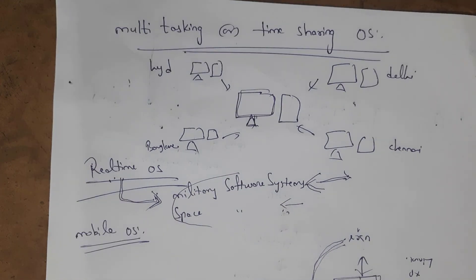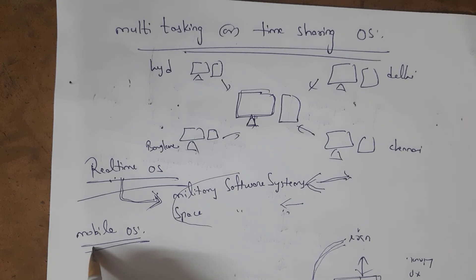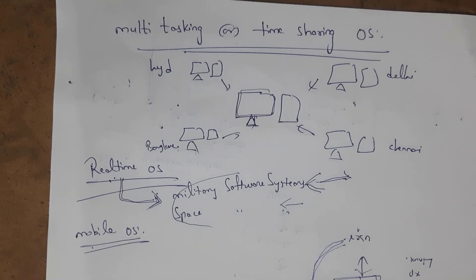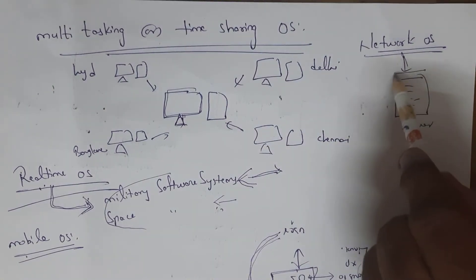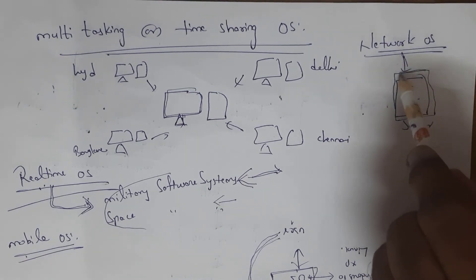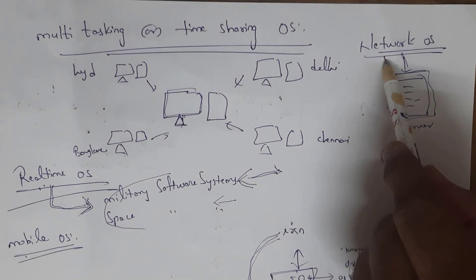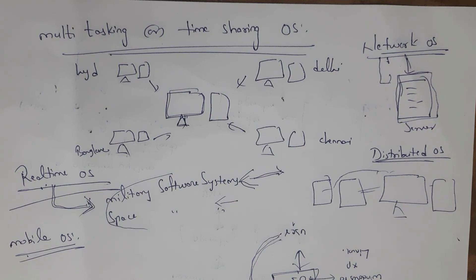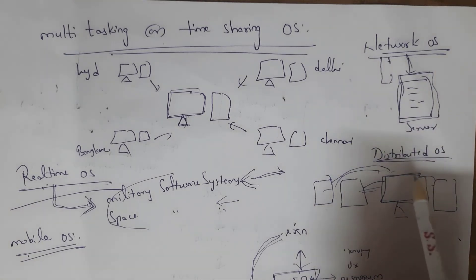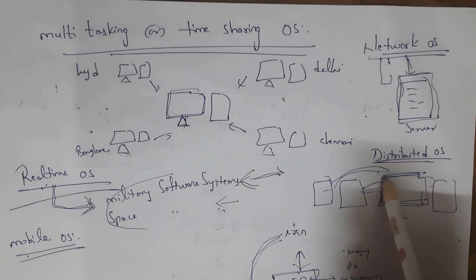A mobile operating system is designed especially for mobile devices — Android and iOS are examples. A network operating system runs on a server; it manages data, manages users, provides security, and handles other networking functions. Finally, a distributed operating system uses multiple processors (CPUs) — unlike a normal computer that has only one CPU — making these systems very fast compared to other systems.